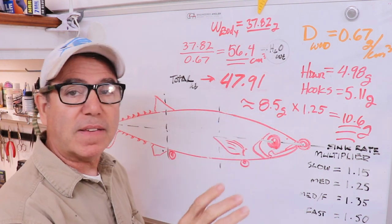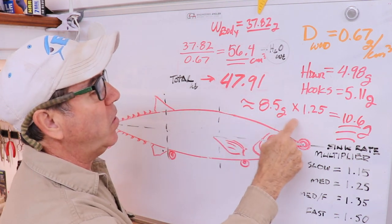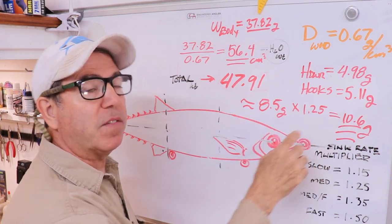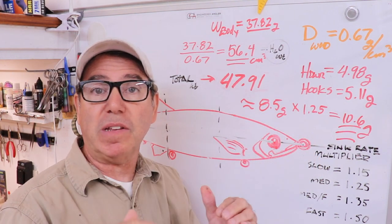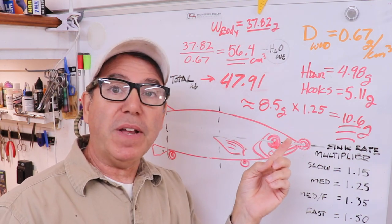That's how much I would have to add to the body to get it to suspend. But since I want it to sink, I want to multiply that times 1.25, so it's going to be 25% more than the amount of weight just to make it neutral.